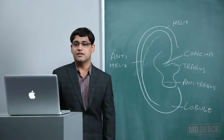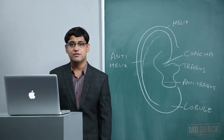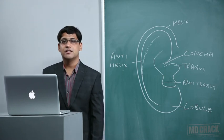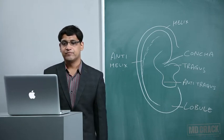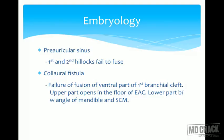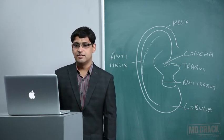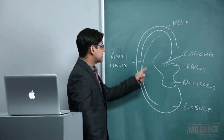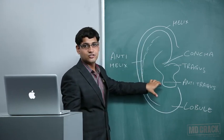Another developmental anomaly is the col-aural fistula - a failure of fusion of the ventral part of the first branchial cleft. It has two openings: the upper part opens in the floor of the external auditory canal, while the lower part opens just below the angle of the mandible. Another anomaly is bat ear, also known as lop ear, where the anti-helix is poorly formed and there is excess conchal cartilage.